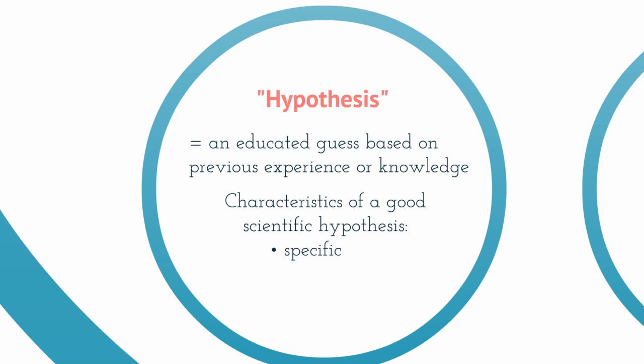A couple characteristics of a good scientific hypothesis. They need to be specific. You need to be able to collect data to answer a specific question. And if your question or your hypothesis is too broad, it's going to be difficult to test that hypothesis. And it also needs to be testable.